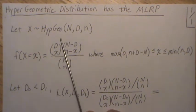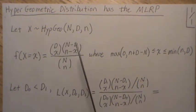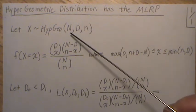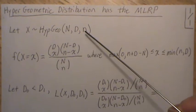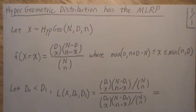So if we let X be hypergeometric with parameters N, D, and n, N is the population size, D is the number of defectives in the population, and n is our sample that we take.